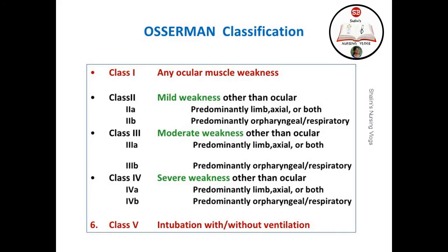The Osserman classification categorizes myasthenia gravis: Class 1 presents with ocular muscle weakness only. Classes 2, 3, and 4 involve no ocular muscle weakness but predominantly bulbar muscle or limb and spinal column weakness — Class 2 is mild, Class 3 is moderate, and Class 4 is severe. Class 5 includes patients requiring intubation with or without mechanical ventilation.